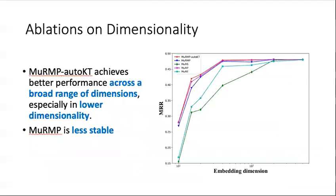Next, we investigated the role of dimensionality. We conducted experiments on WN18RR and reported the MRR of the mixed-curvature models against the single curvature models. We can see that the M²GNN method achieved better performance across a broad range of dimensions, especially in low dimensionality.